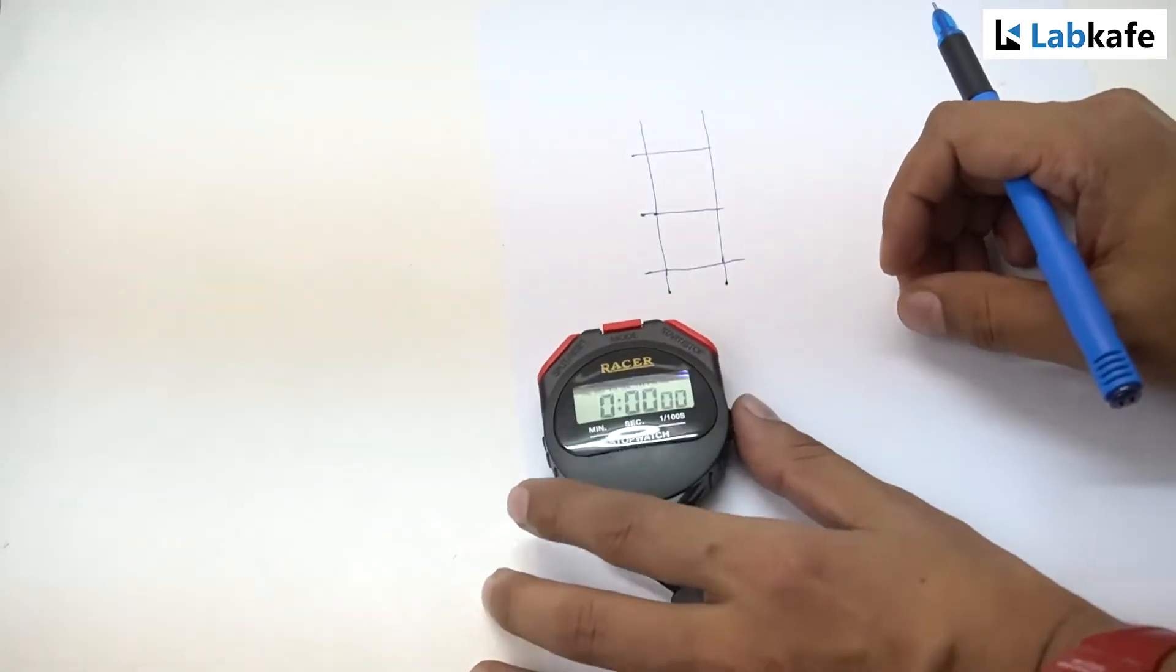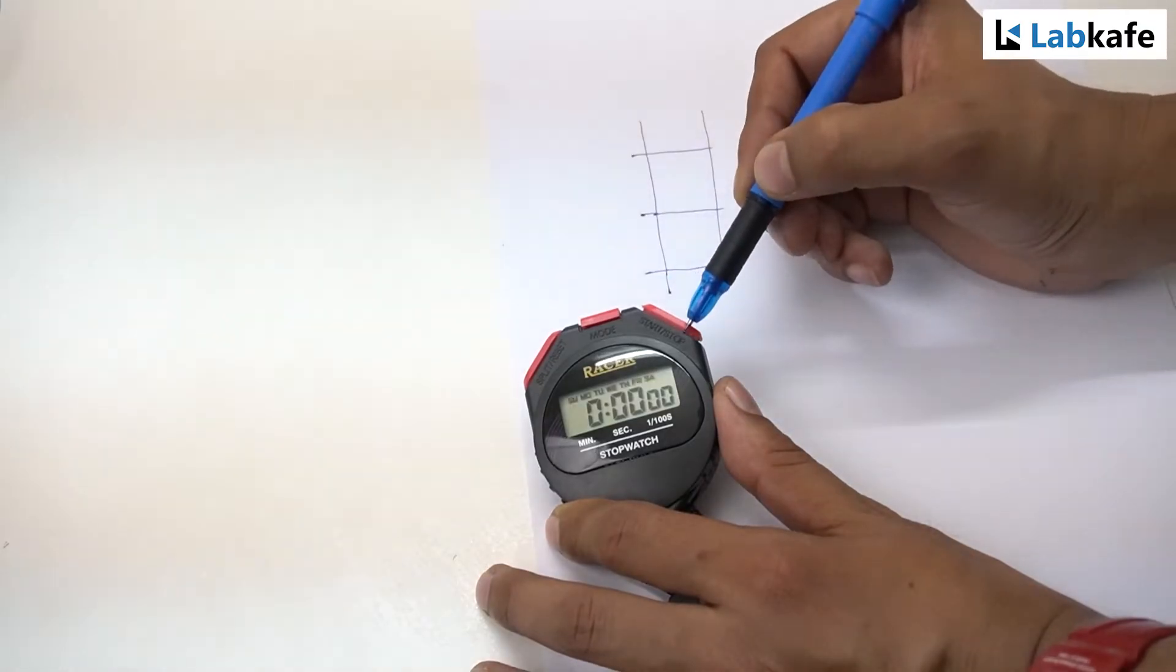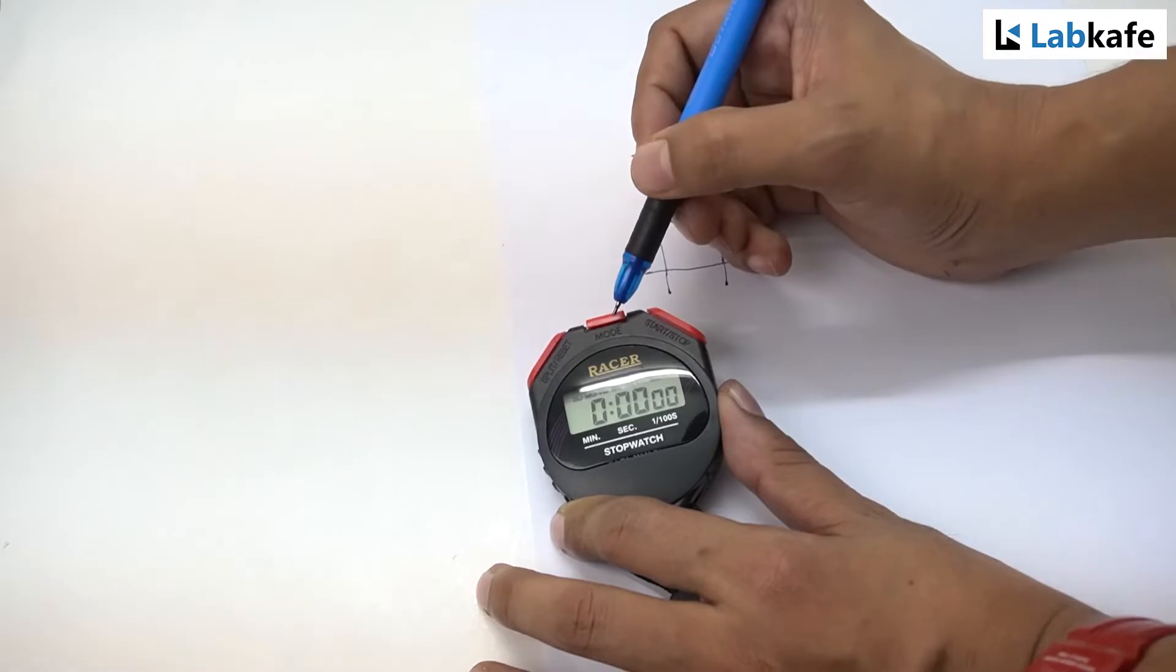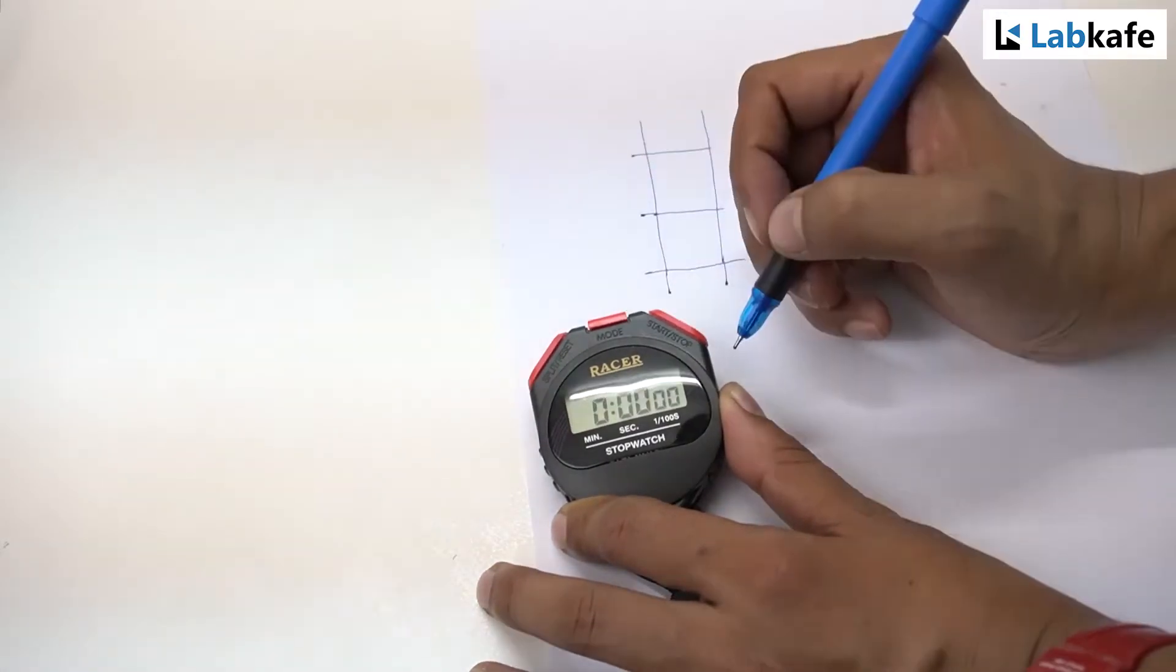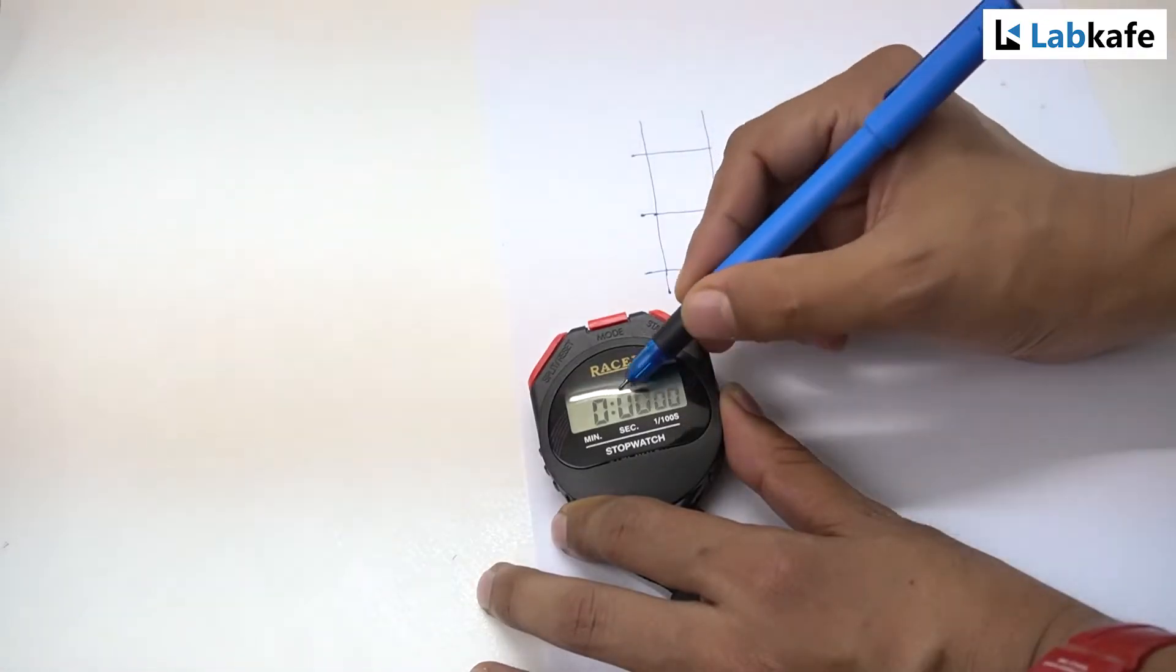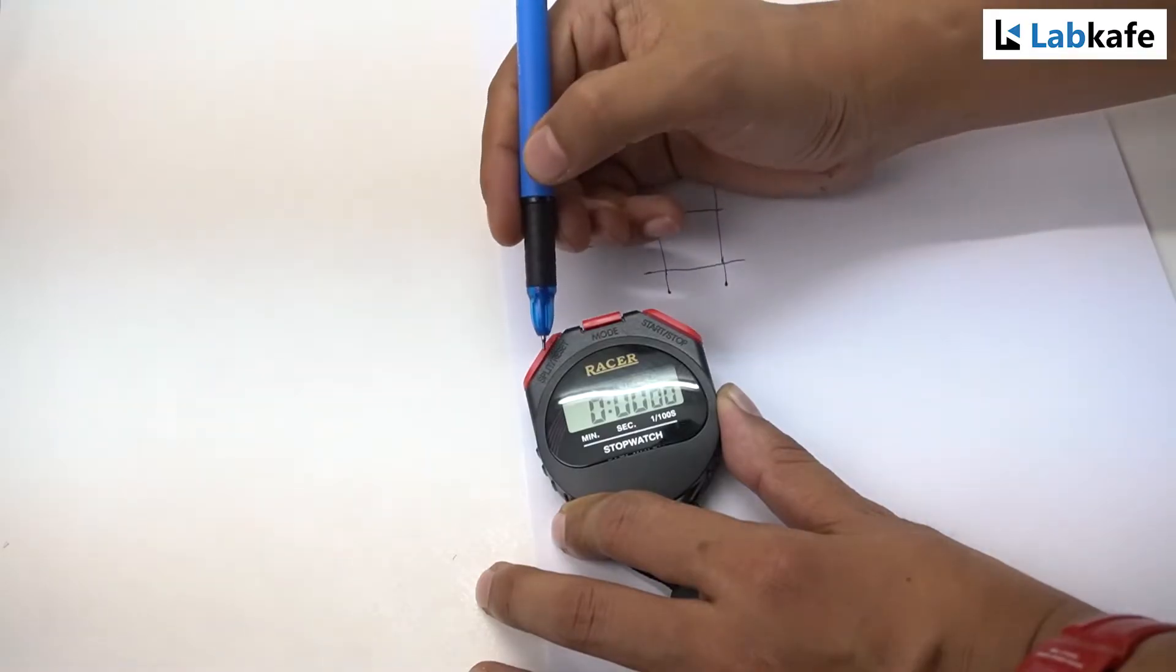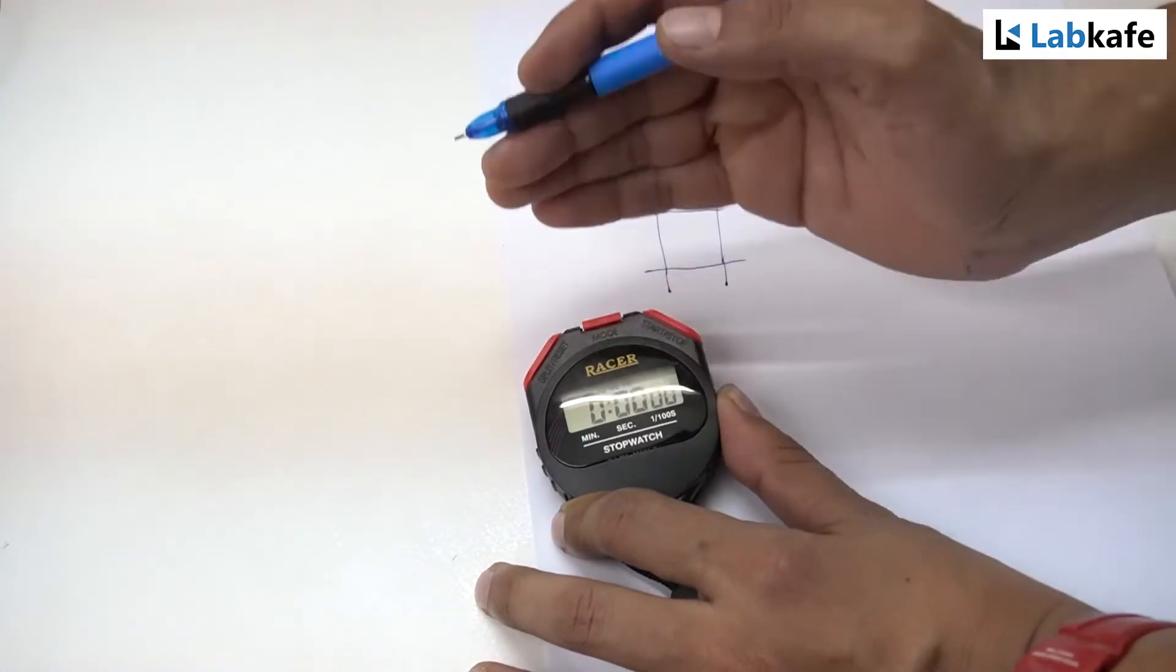Before we proceed, let's see how we handle a stopwatch. This is a stopwatch. It has a start and stop button, a split and reset button, and a mode button. Mode button decides which mode we want to use. Start and stop button helps you start and stop the stopwatch. Split or reset button helps you split the timer and reset the timer.